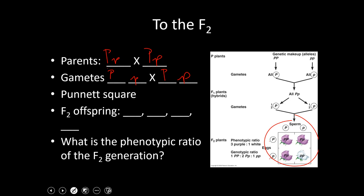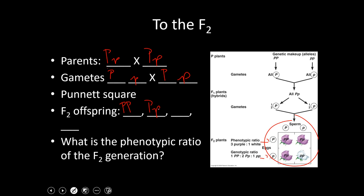The big P comes down into every box below it, the little P fills those boxes, and the side letters go across. For your F2 offspring you have four options: homozygous dominant big P big P, two heterozygotes big P little P, and one homozygous recessive little P little P.